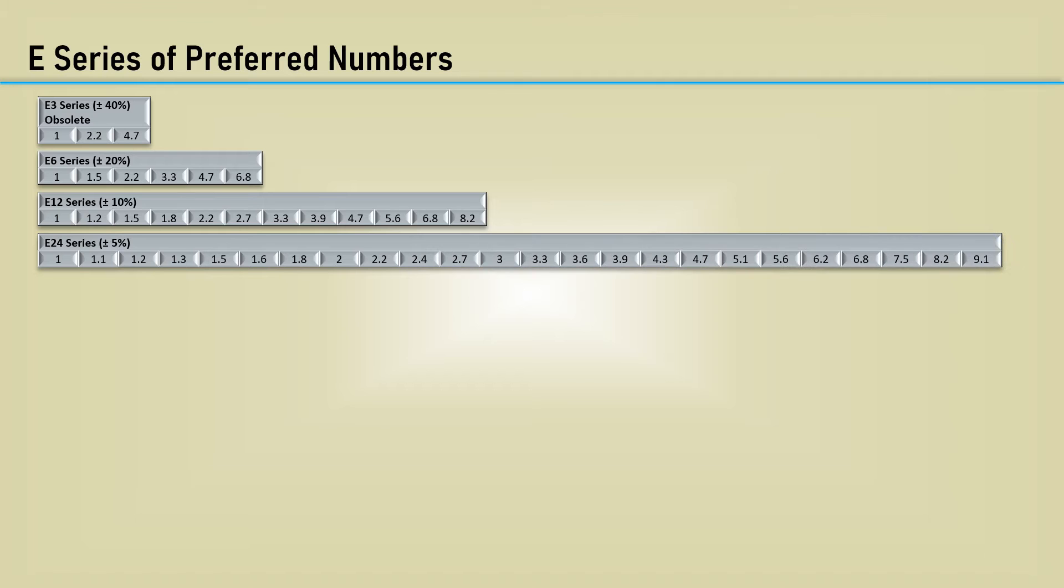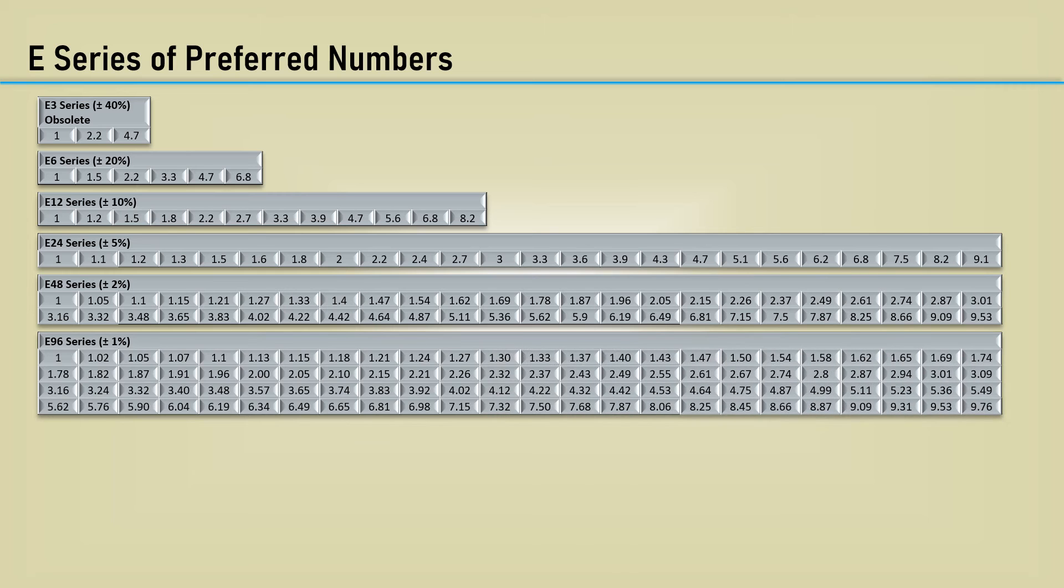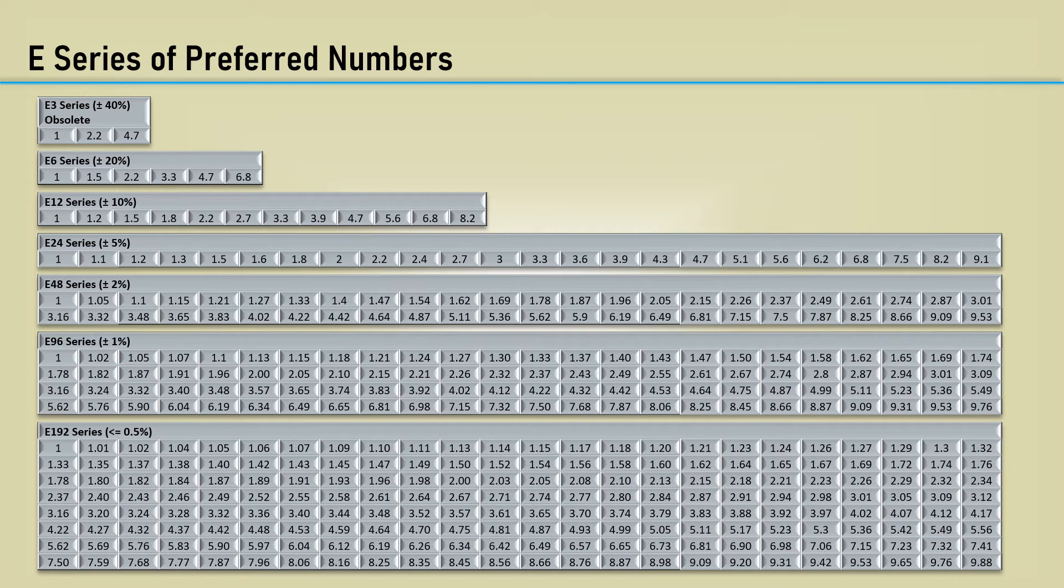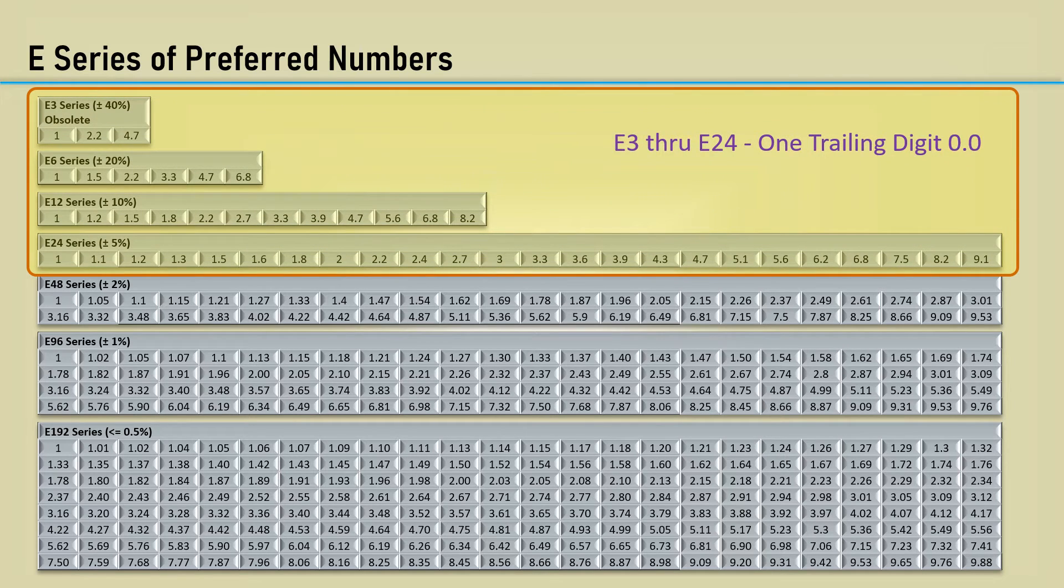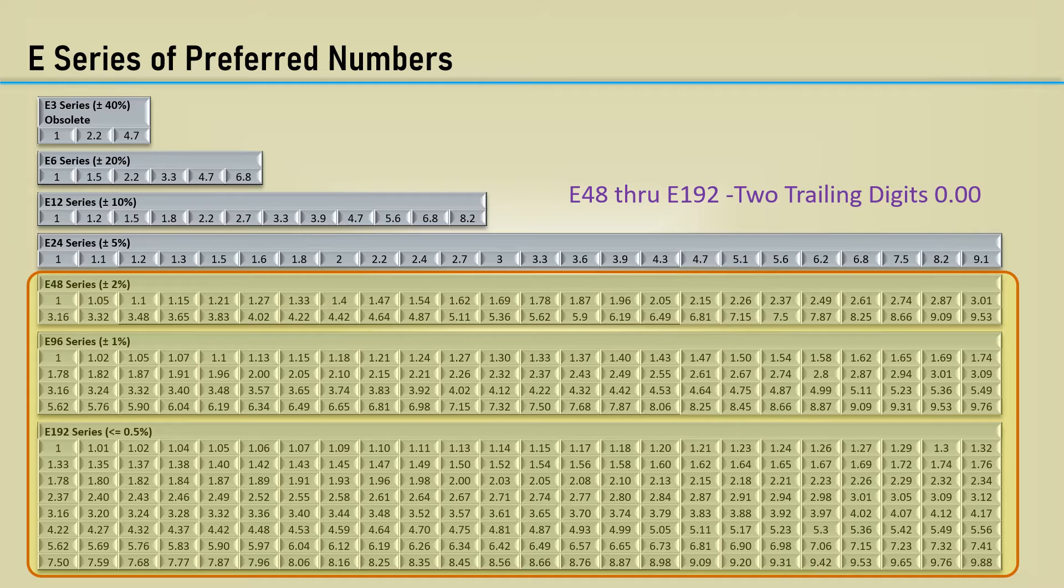The standard is called the E-Series of preferred numbers. The number designates how many numbers are in the series. The E3 series is pretty much obsolete. The E6 series has six numbers and represents a 20% tolerance spread. The E12 series is for 10% tolerance spread. E24 is 5%, E48 is 2%, E96 is 1%, and E192 is 1.5% or lower. The E3 through E24 series values are rounded to one trailing digit, and E48 through E192 are rounded to two trailing digits.